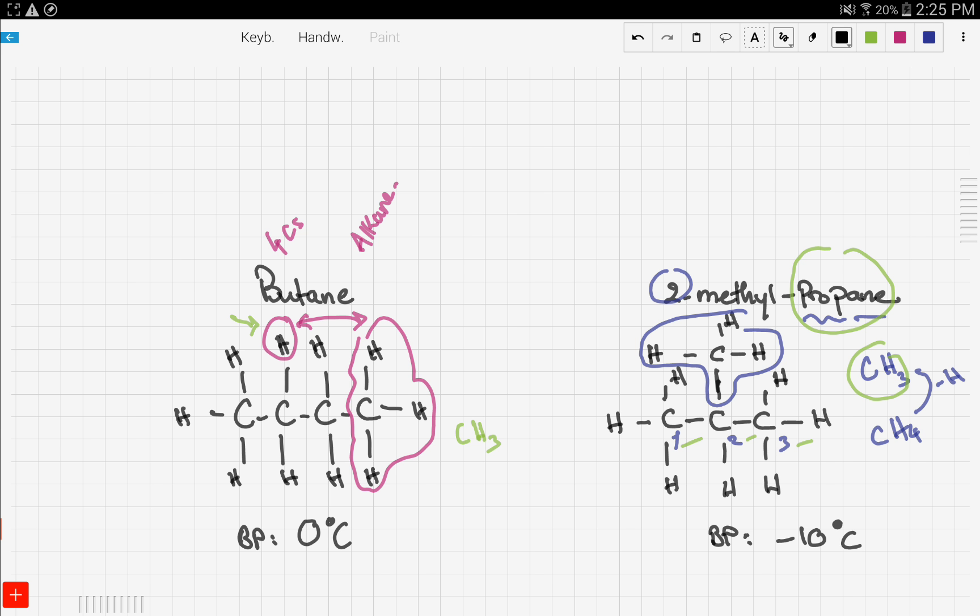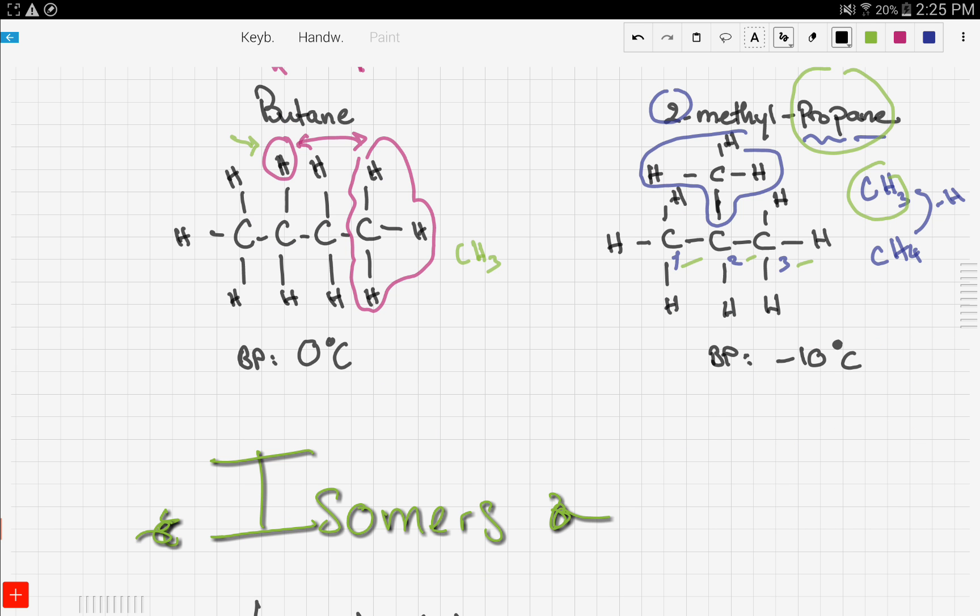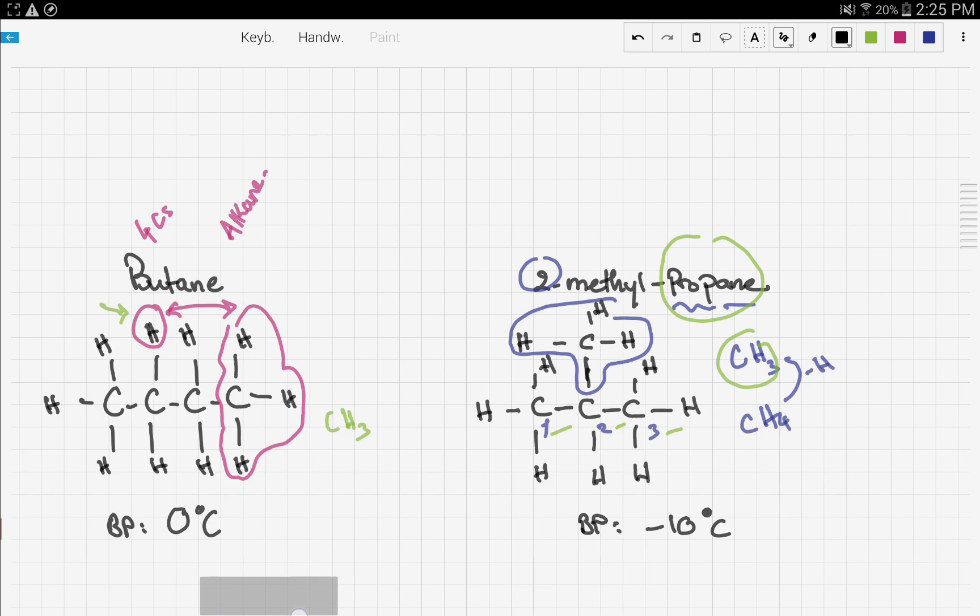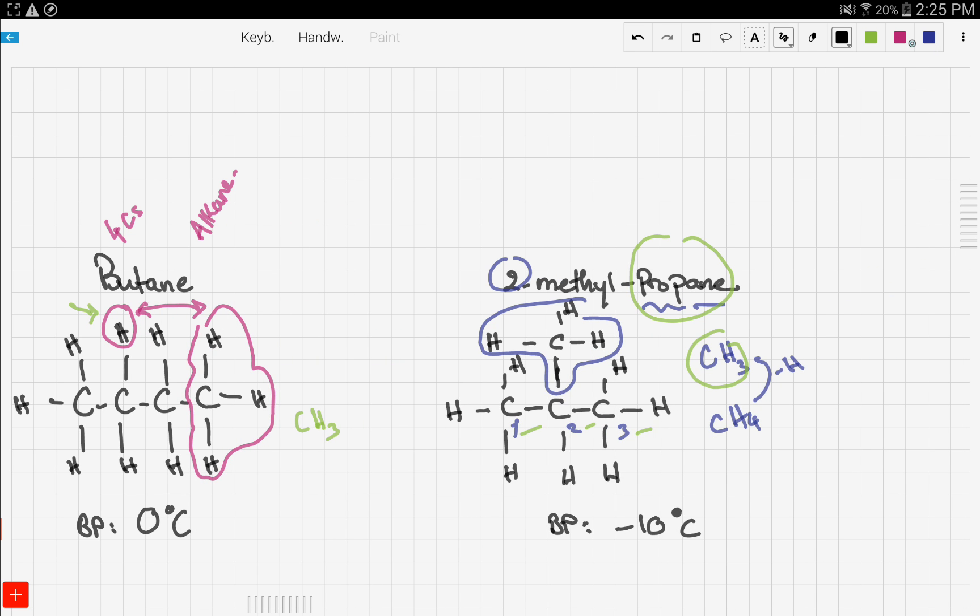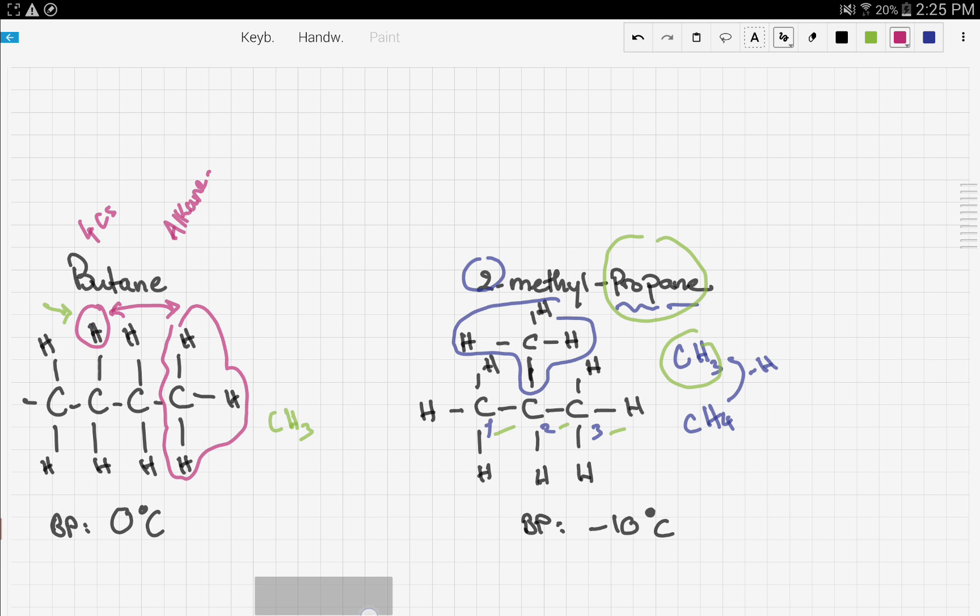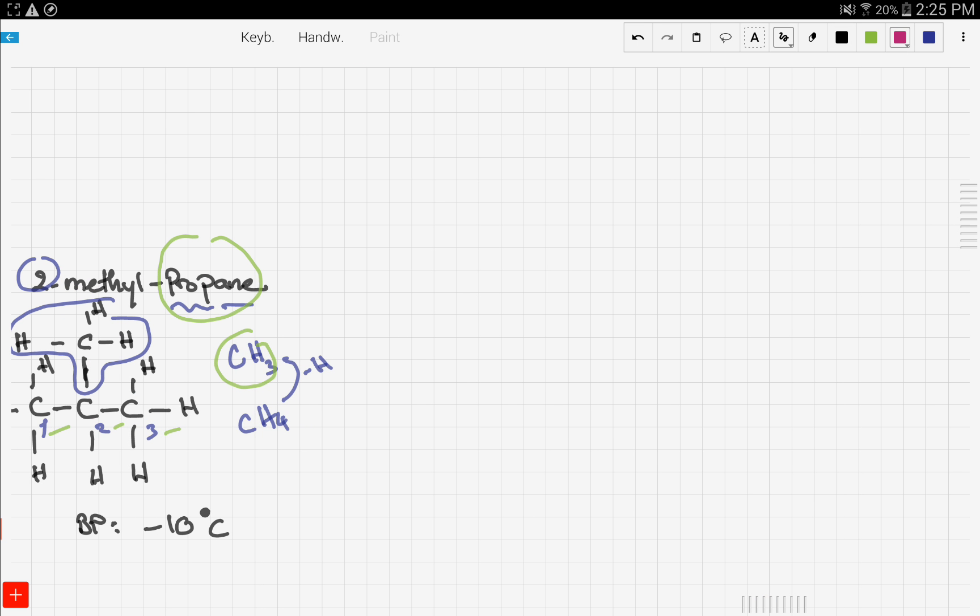And this is because, let's write a conclusion, well here, let's scroll to the right and write our conclusion. The change in boiling point is because branched isomers have a lower boiling point. And this is because the attraction between them is less strong, and therefore, less heat is needed to overcome it.